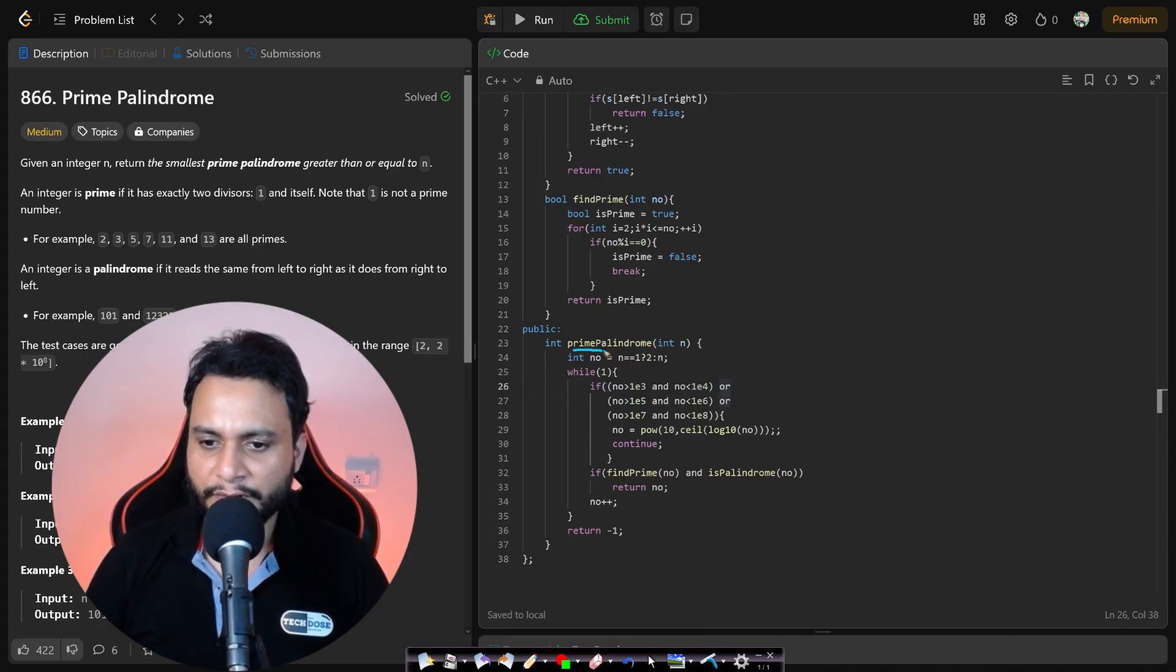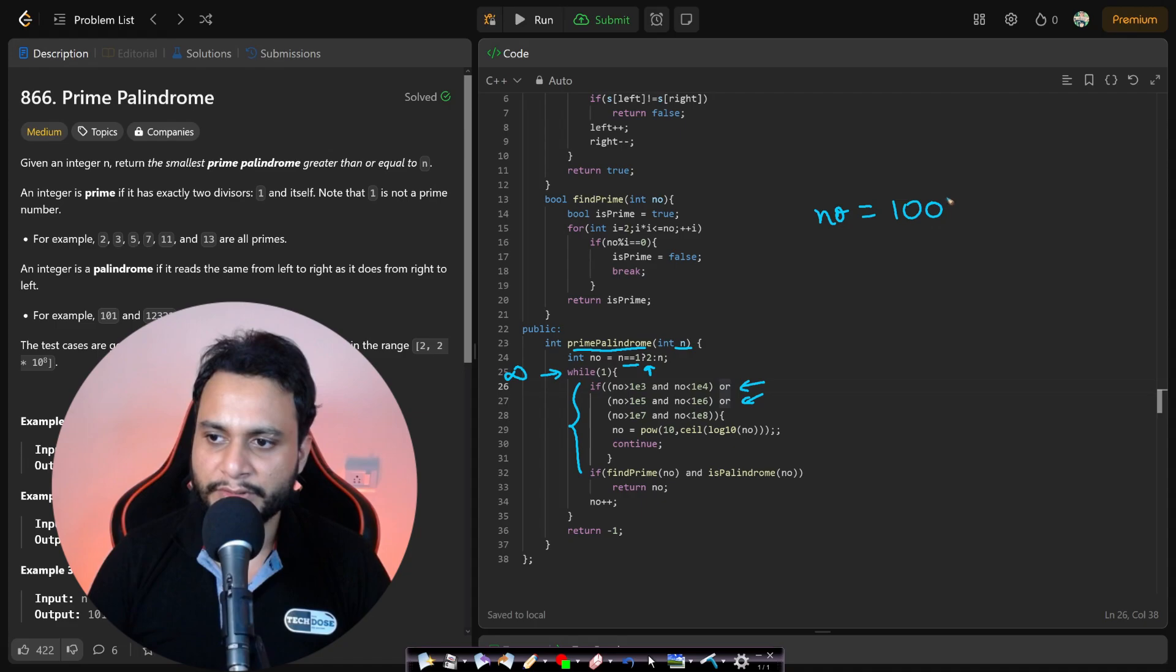Let us now look at the code. This is the main function for our code, which is prime palindrome. We're given the number n. If n is 1, our answer will be 2. Otherwise, we start processing the number. This is the infinite loop. I'll be skipping all the even length number of digits. How do we do that? Let's say the number equals 1001, so I want to skip all four-digit numbers and directly jump to the five-digit number.